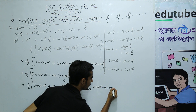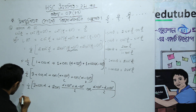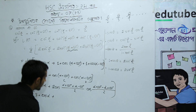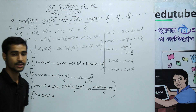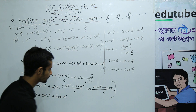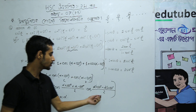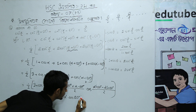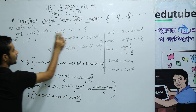So it equals half of 3 plus cos alpha, plus 2 cos alpha into cos(120°). Here, alpha plus alpha minus 120 plus 120 divided by 2 gives alpha, and the difference 240 divided by 2 gives 120. So we get cos 120 degrees.